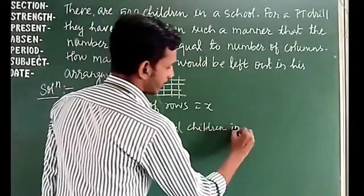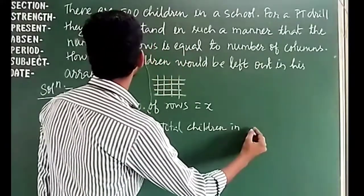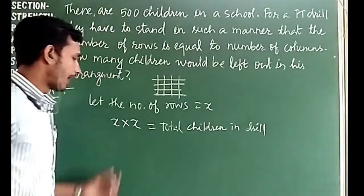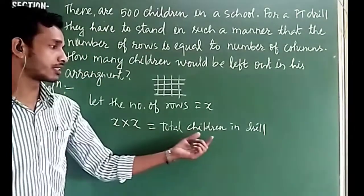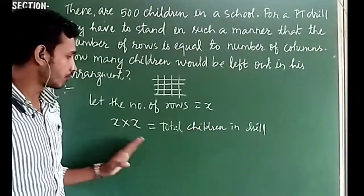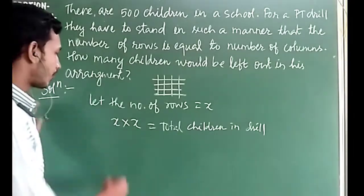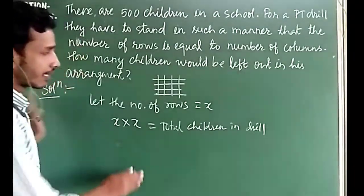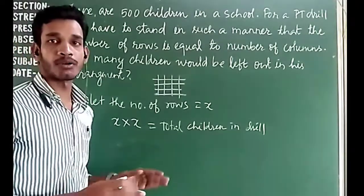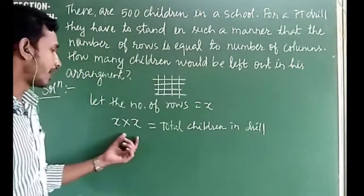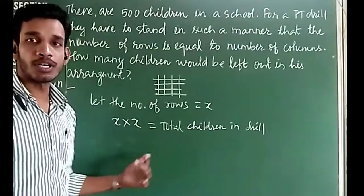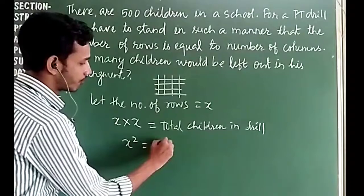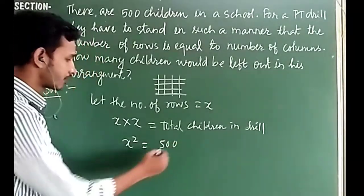We need to find the square root of 500. The remainder will be the number of children left out. Since x² ≈ 500, and 500 is not a perfect square, we find the square root by the division method, and the remainder gives us the number of students left out.